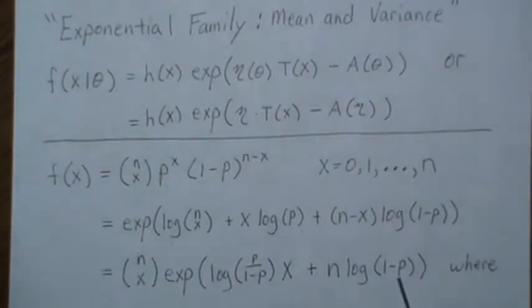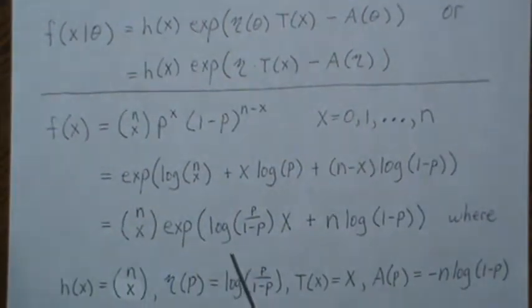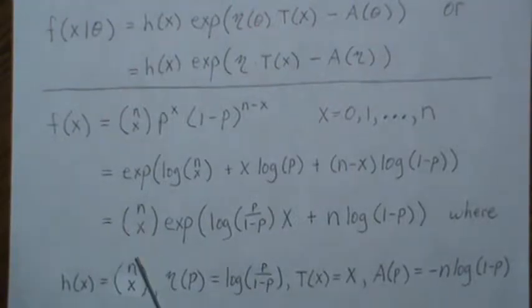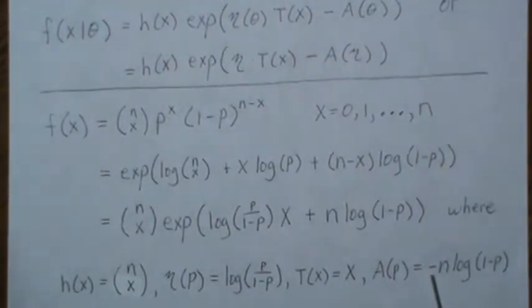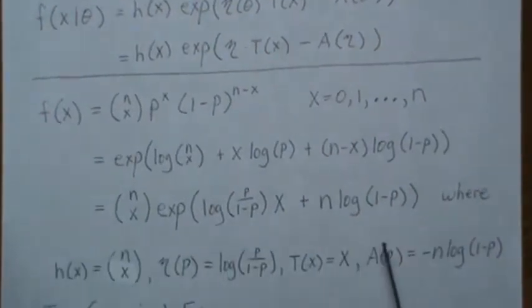So now this is in the exponential form. Here this is your h(x), and this is your η(p) which is this piece here. Your sufficient statistic is x, and the log partition is negative n log(1-p). Now it's negative because it needs to be negative to be in the form that we want.